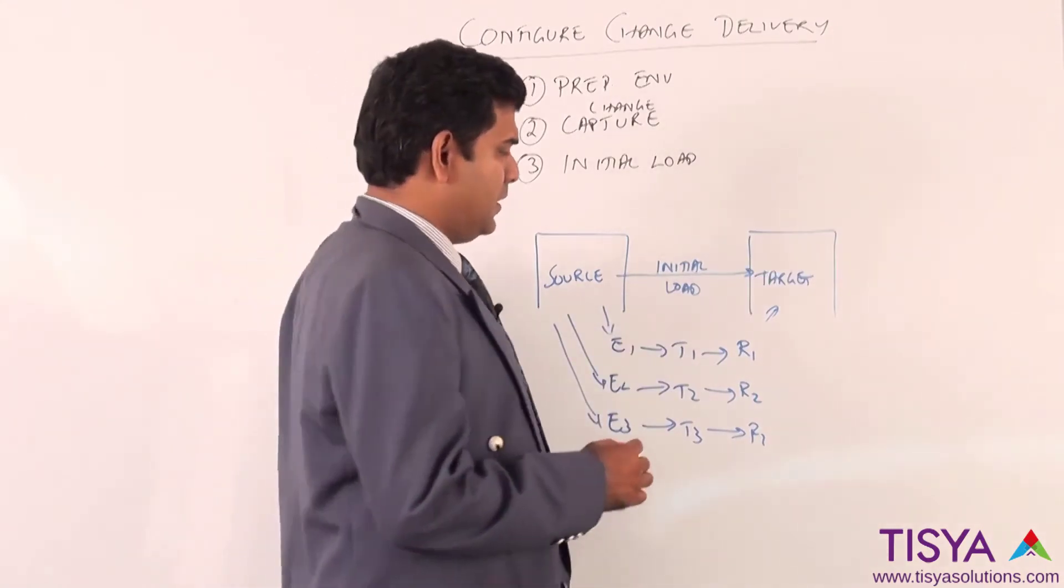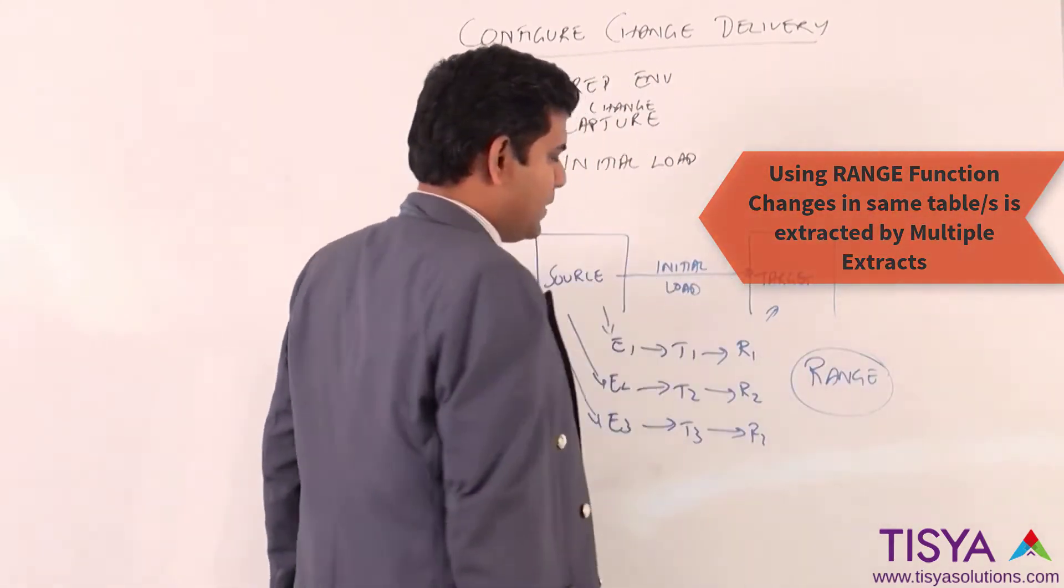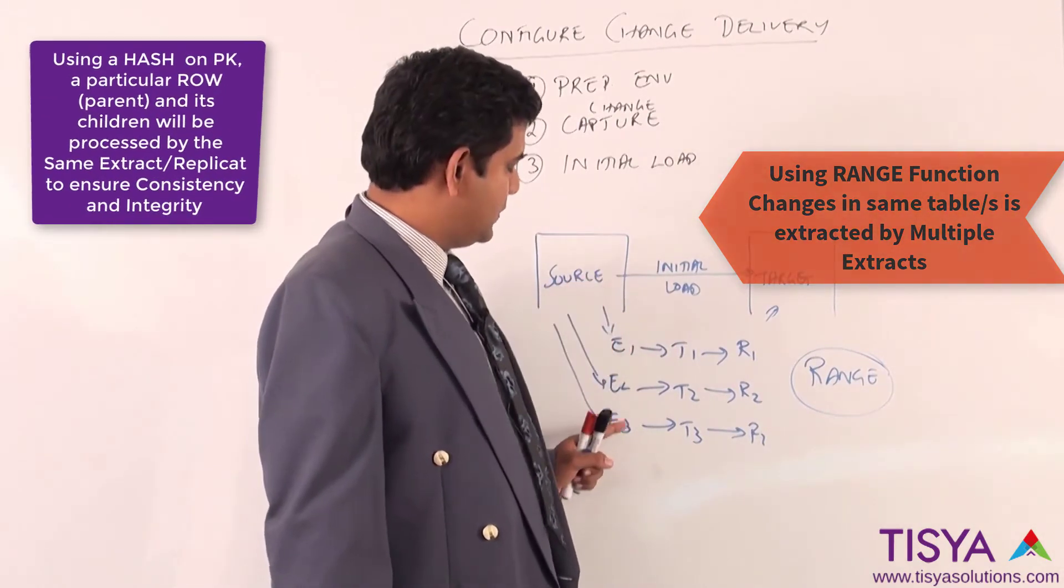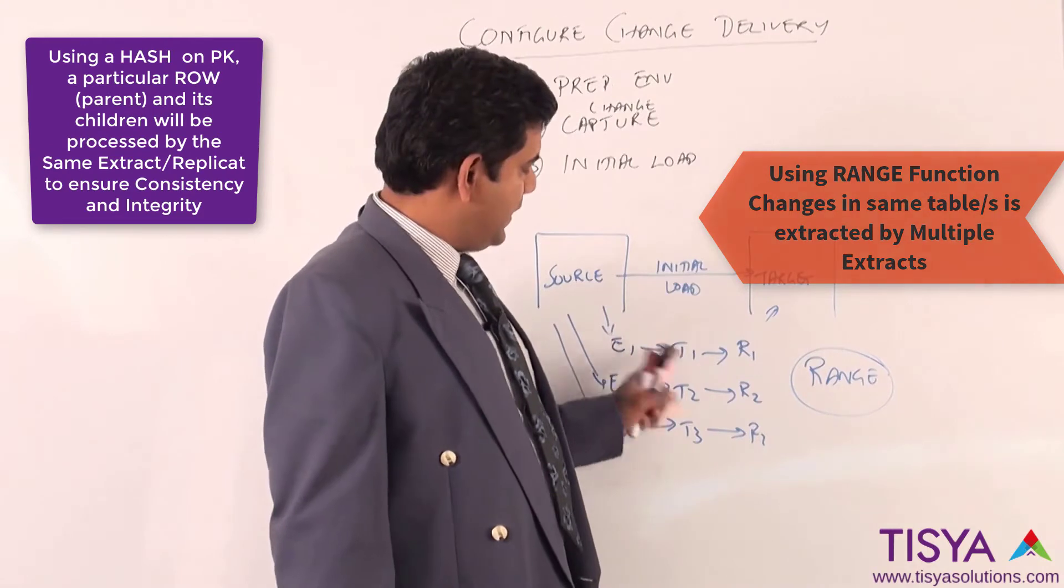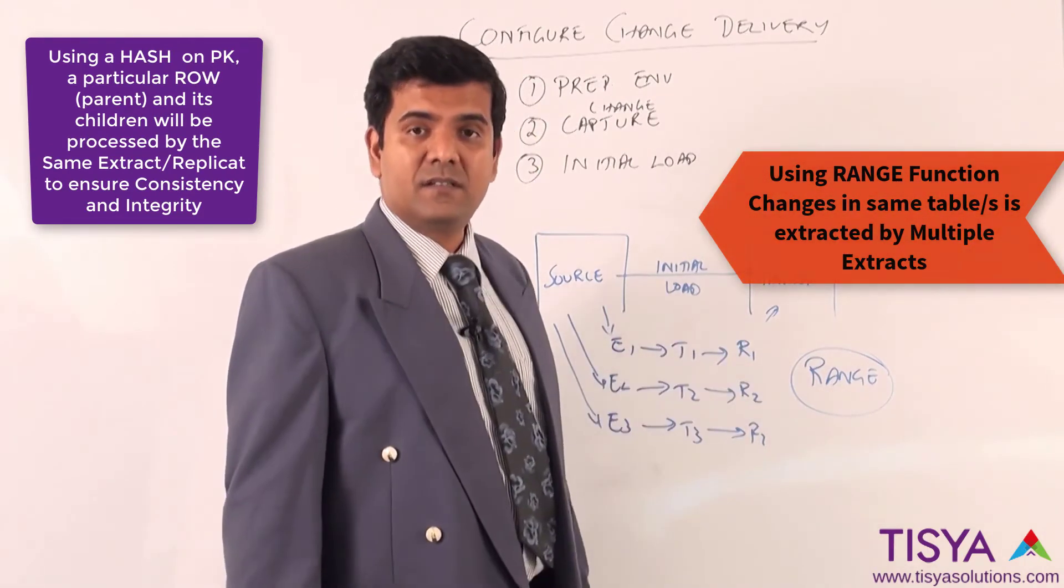Another option is making use of something called a range function, through which I might read from the same table across three extracts, create three different trails, and read from three different replicates, while taking care of consistency.